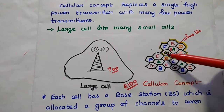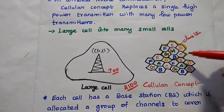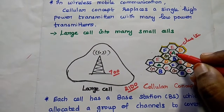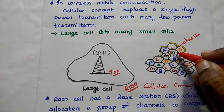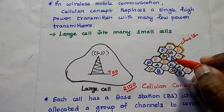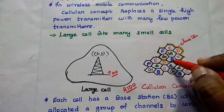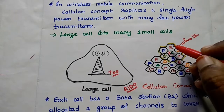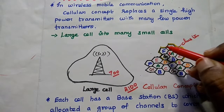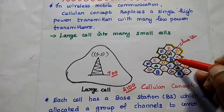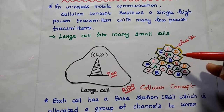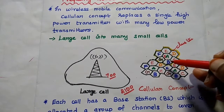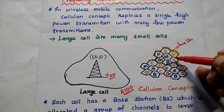So cells A, B, C, D, E, F, and G each have 100 channels. We have to ensure that neighboring cells are not allocated the same set of frequencies. For example, if we allocate frequencies 1 to 100 for cell A, the same should not be used for cells B, C, D, E, F, and G. So we can allocate 101–200, 201–300, 301–400, 401–500, 501–600, and 601–700 to the remaining cells. Neighboring cells must be allocated completely different frequency ranges in order to avoid interference.